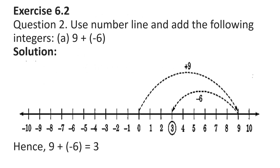Exercise 6.2, Question 2: Use a number line and add the following integers. Part A: 9 plus minus 6. First, we will move to the right of 0 by 9 steps reaching 9. Then we move 6 steps to the left of 9, reaching 3 as shown in the figure. Hence, 9 plus minus 6 is equal to 3.